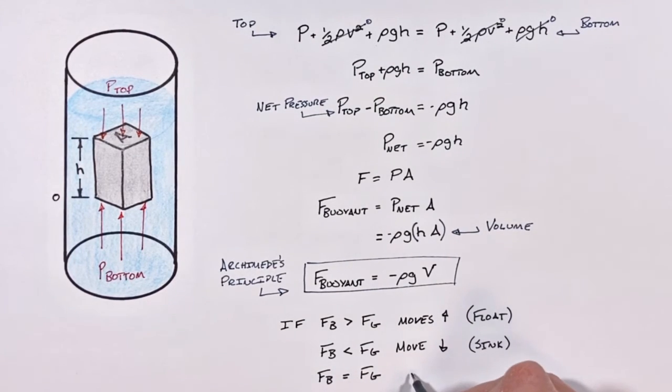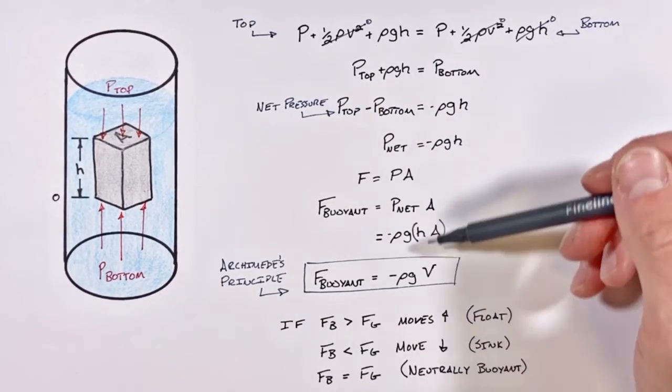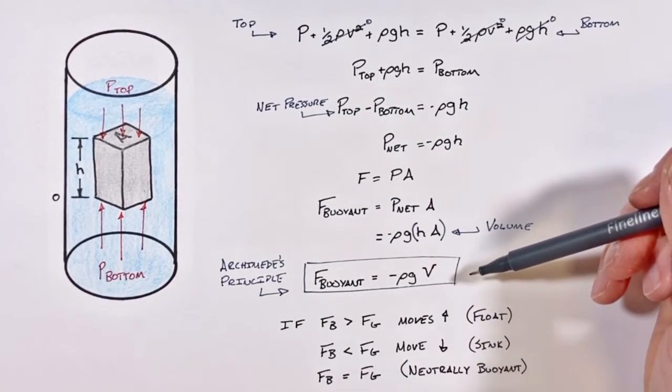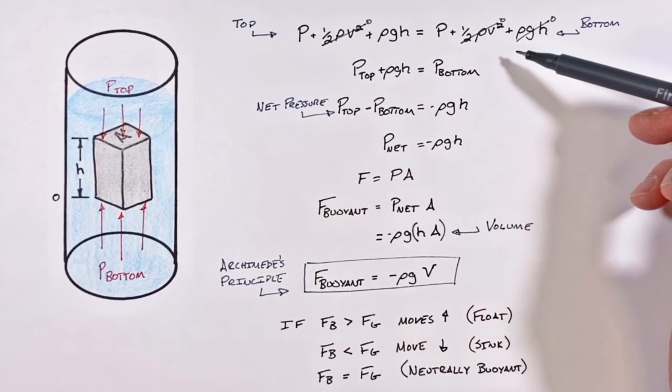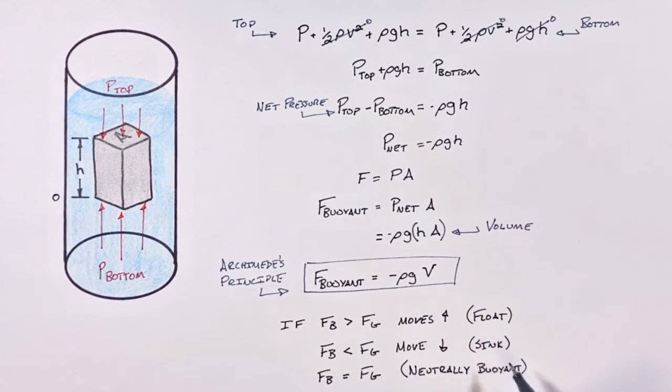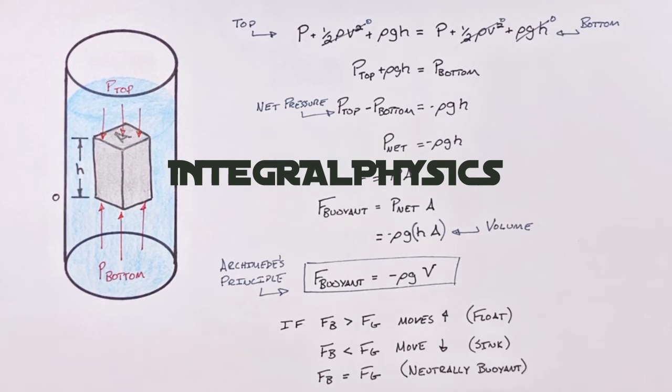So what we've done is derived an expression for the buoyant force, or Archimedes' principle, from Bernoulli's law, and we can see whether or not an object is going to float or sink. And on that note, that's all for now.